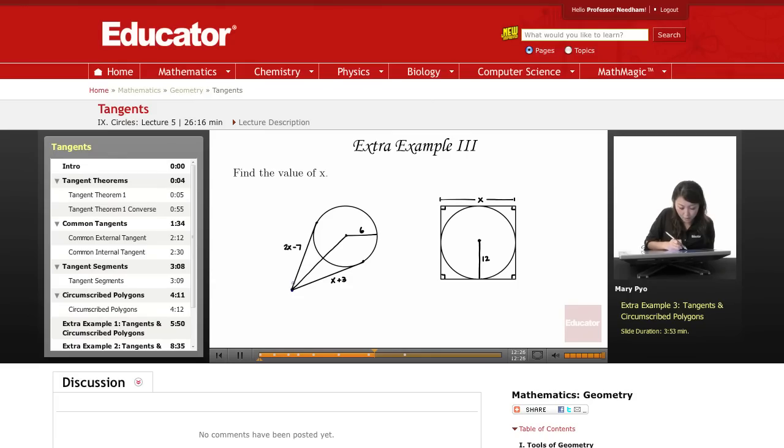I know that this tangent and this tangent are congruent because tangents meet at a point, tangents meet at the same point, then they are congruent. So I can just make this and this equal to each other. This segment and this radius, nothing, doesn't mean anything to me.